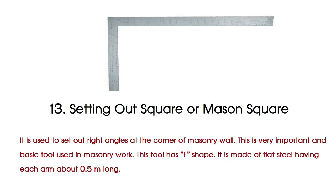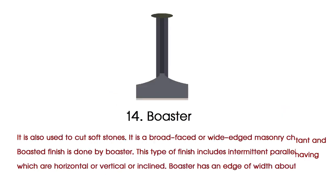Setting out square, or mason square, is used to set out right angles at the corner of a masonry wall. This is a very important and basic tool used in masonry work. This tool has an L shape and is made of flat steel, with each arm about 0.5 meters long.